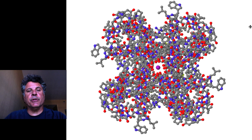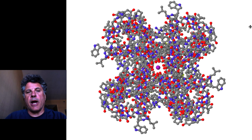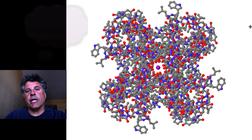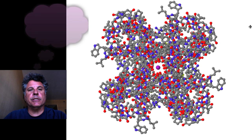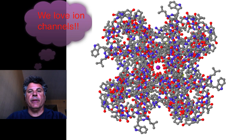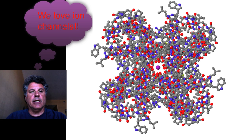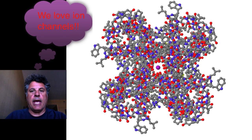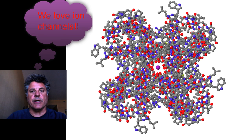We're going to take this opportunity for a parenthetical aside on ion channel structure because the phenomenon of protein channels that are selectively permeable to certain ions is very interesting. So we're going to look at a potassium channel, shown on the screen. This happens to be from a bacterium, but it's applicable to ion channels in eukaryotes like ourselves as well.